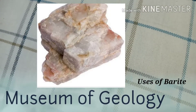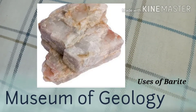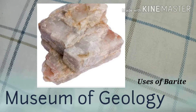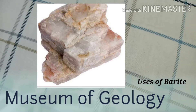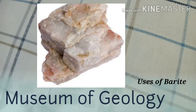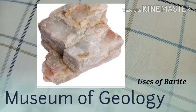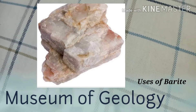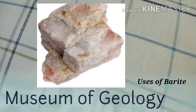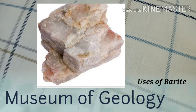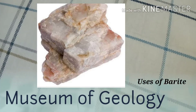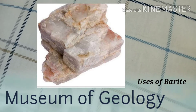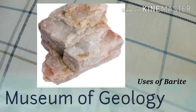Hello viewers, welcome back to my channel Museum of Geology. Now I will discuss about the mineral barite. Barite is a mineral consisting of barium sulphate. It is generally white or colorless and is the main source of the element barium. It is the primary ore of barium, which is used to make a variety of barium compounds.